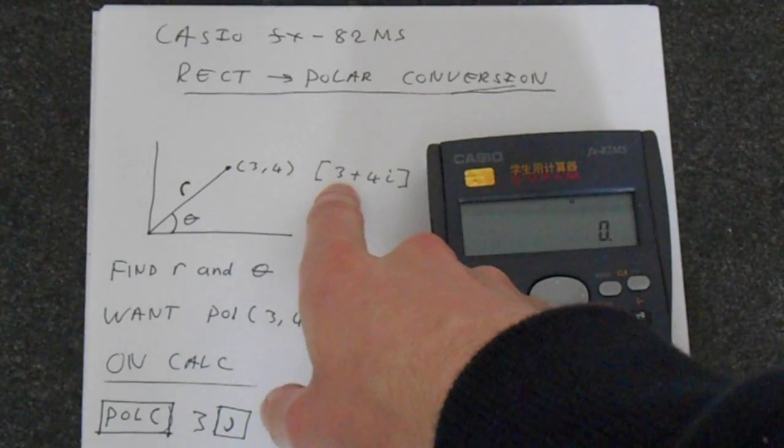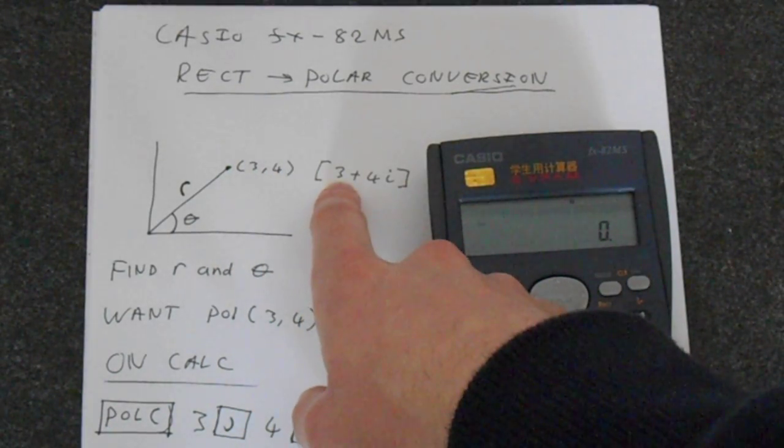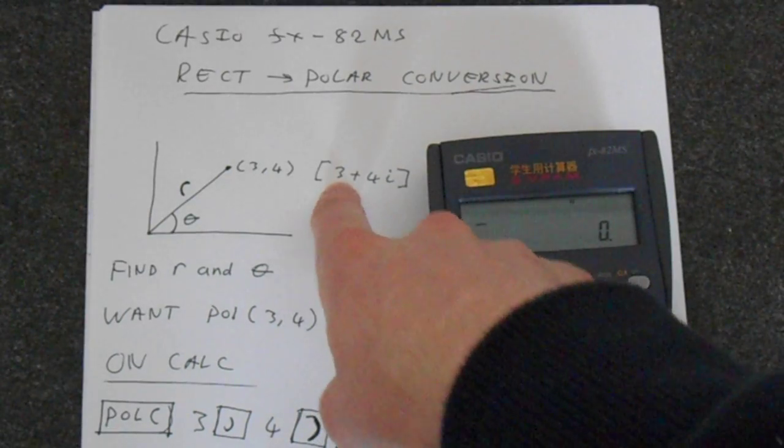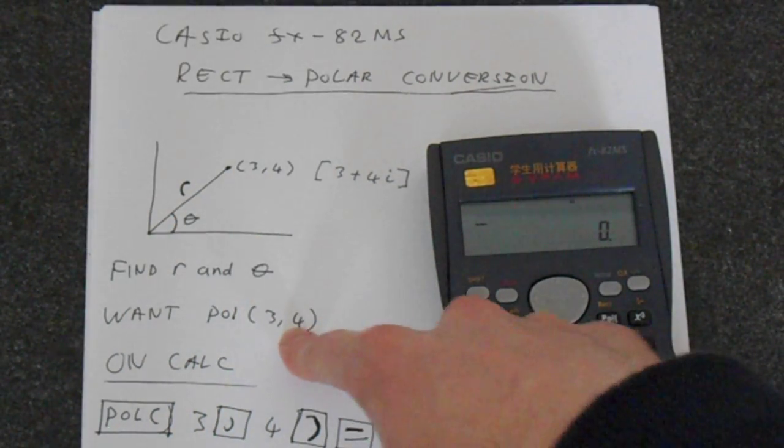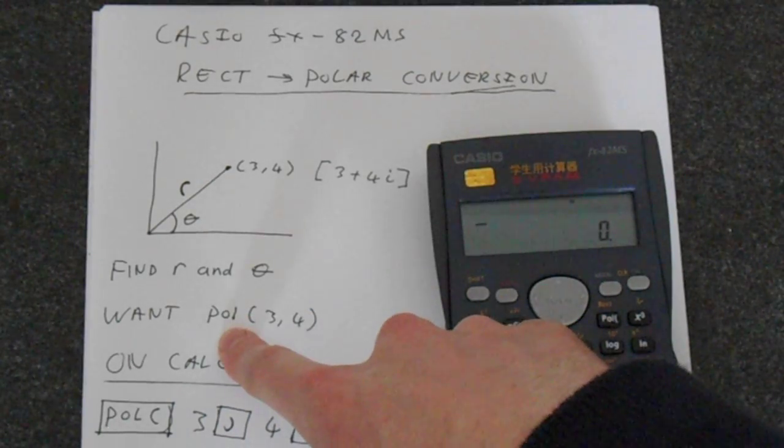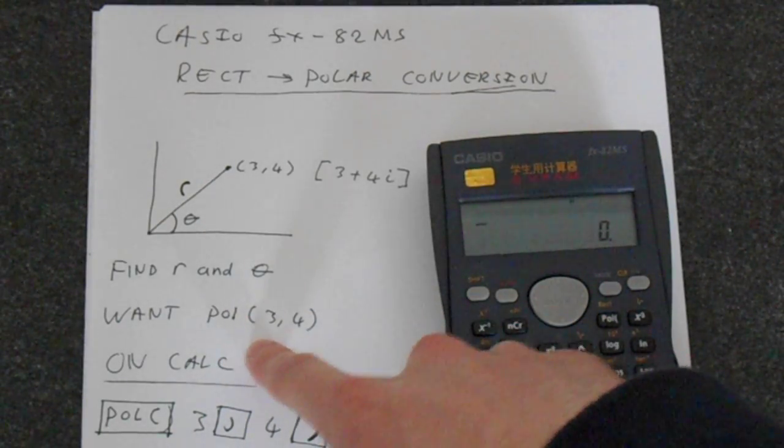And so if we want to convert 3 plus 4i into polar form, we need to find this r and this theta. So what we want to put into the calculator is pole, which is a polar function, 3, 4.